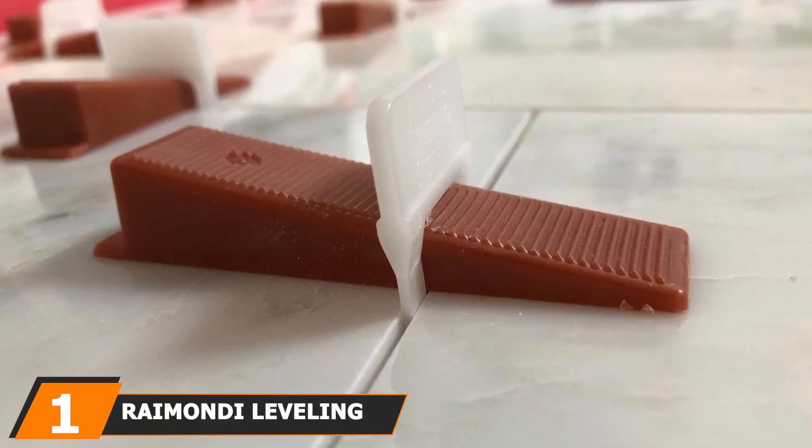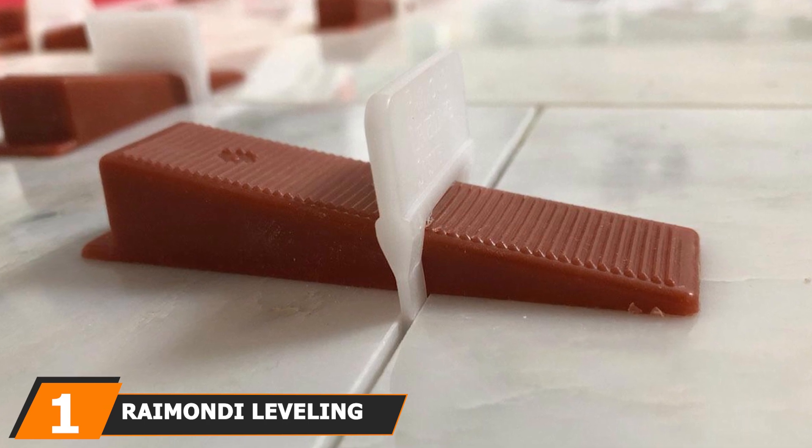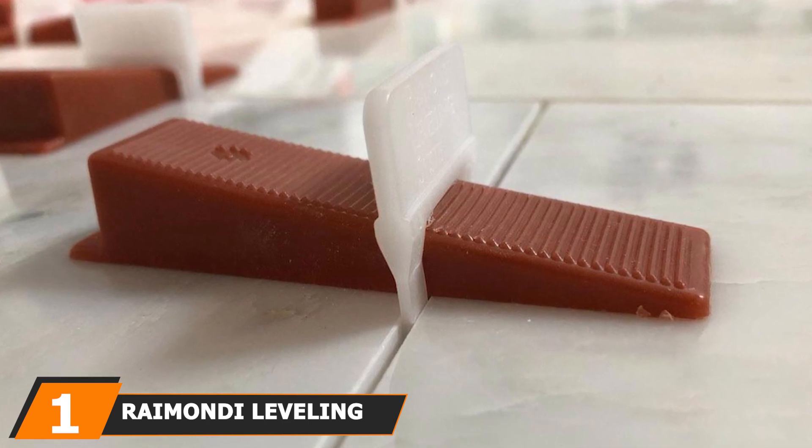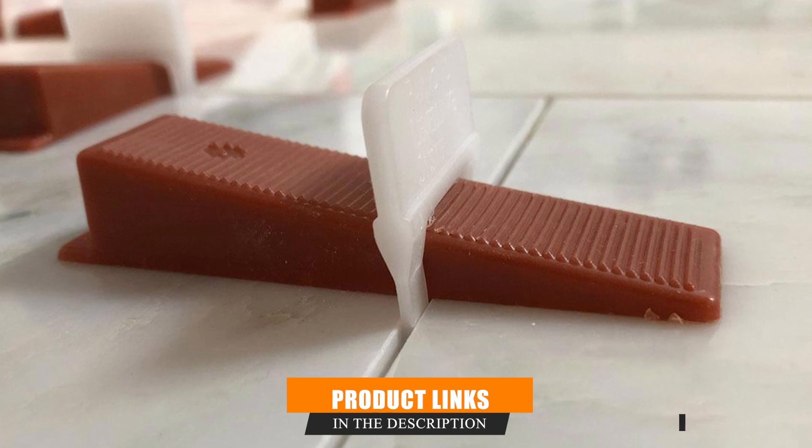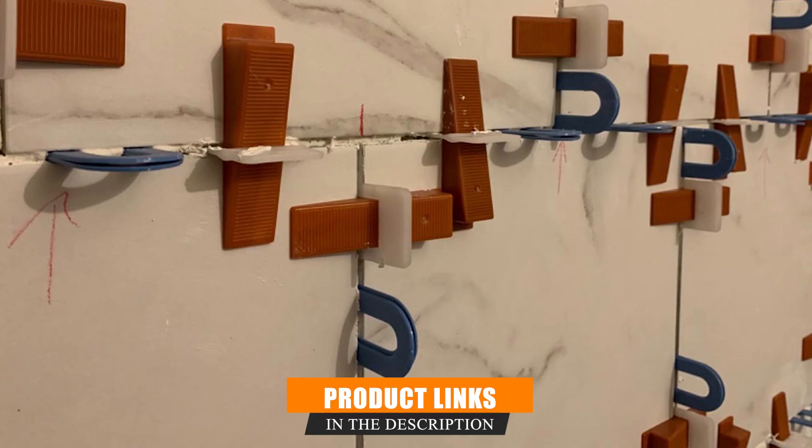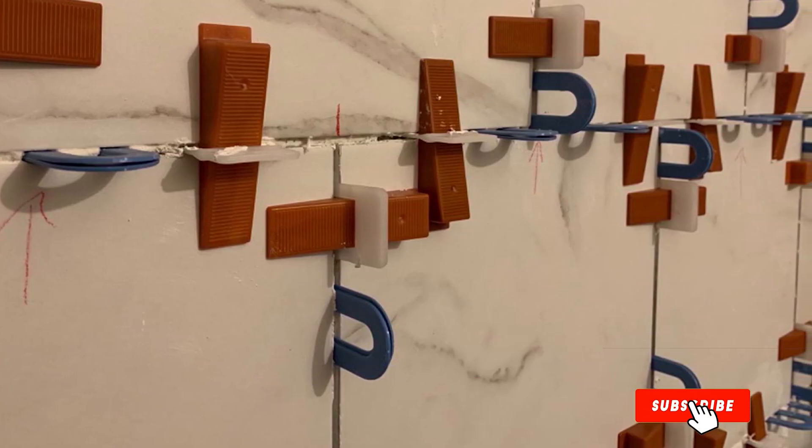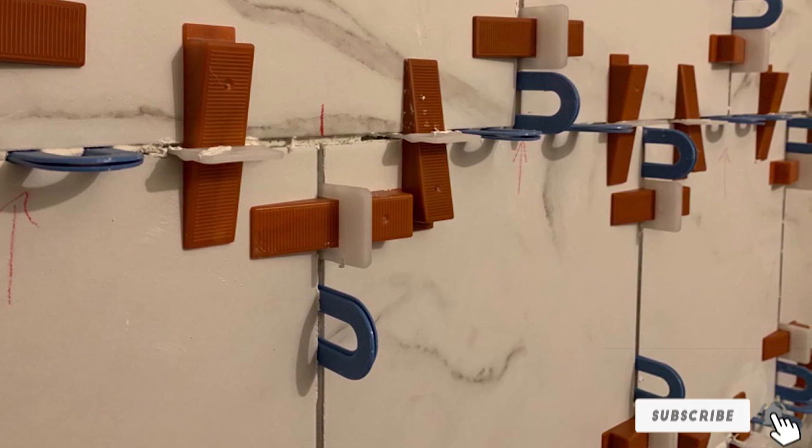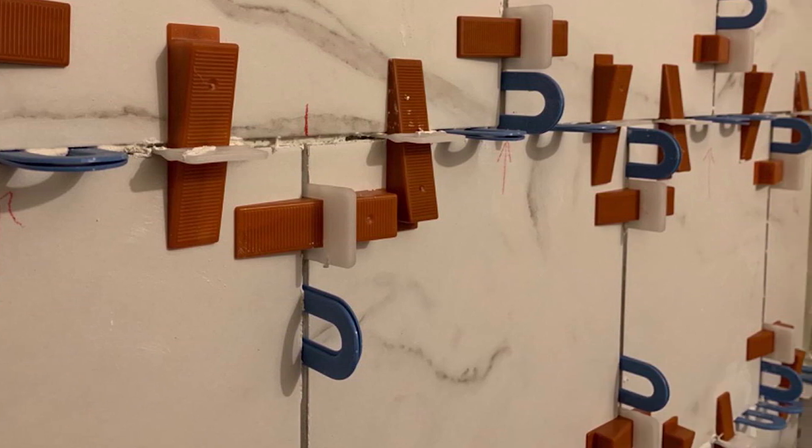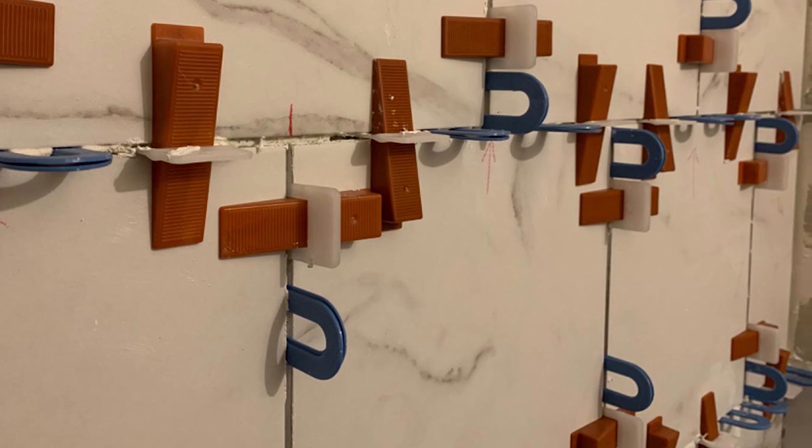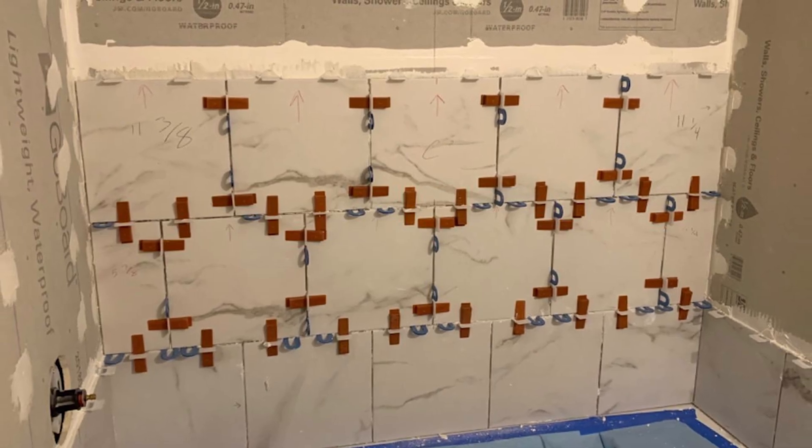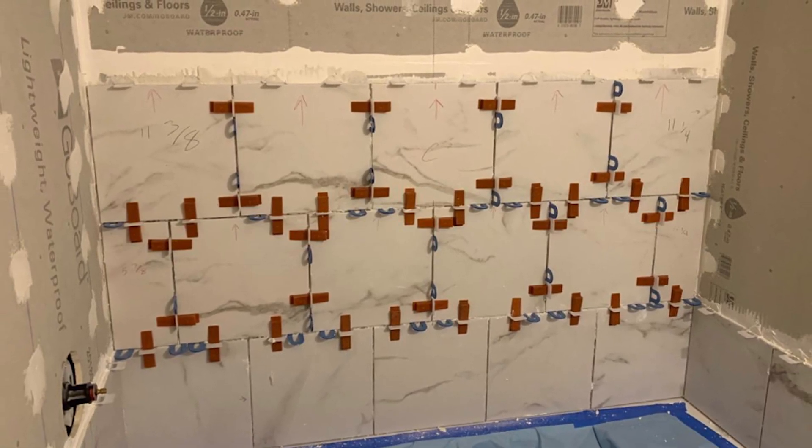At the first position of our list, we have Raymondi Leveling System Starter Kit, the original clips and wedges that begun the multi-million dollar industry. RLS is an easy to use and affordable way to get started with tile lippage tuning clips without spending a lot. In 10 years of using them, they've always managed to keep up with whatever format tiles I've used, from 24x24 porcelain tile to wooden planks.